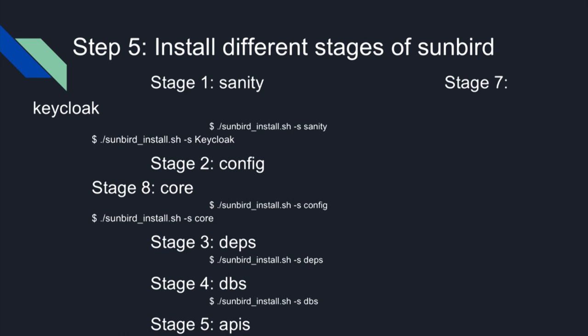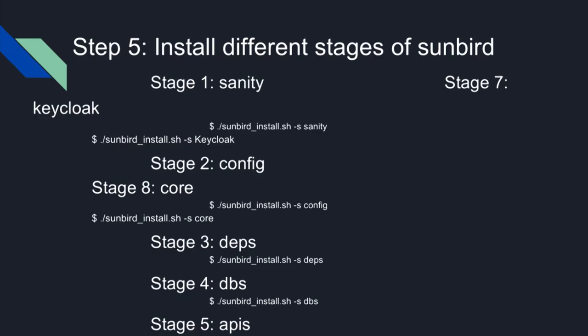The APIs stage was used to install and deploy the Kong API. Proxy was used for installing the nginx server. The Keycloak stage installs Keycloak, which is used for authentication purposes. The eighth and final stage was the core Sunbird stage — while all the other stages were third-party, this one was Sunbird's own software.